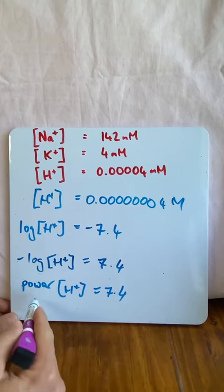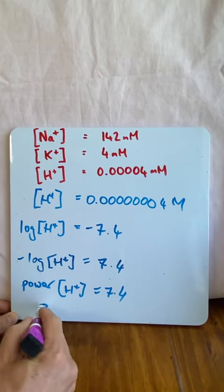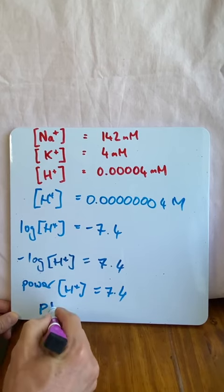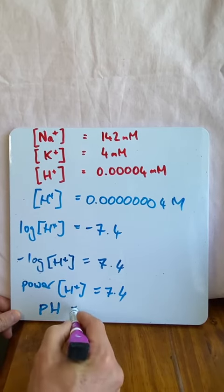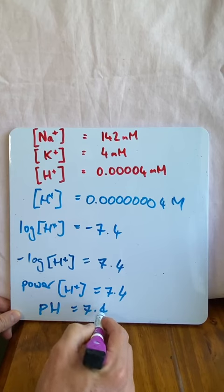But you know what? We can get rid of that. We can shorten it even further and just do the P from the power and the H from the hydrogen ions and the pH of your blood is 7.4.